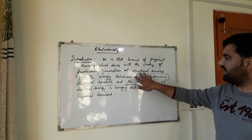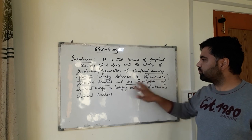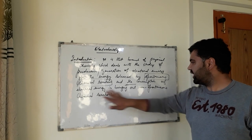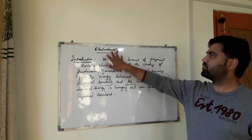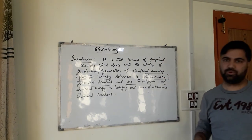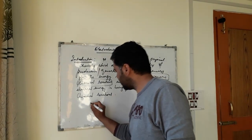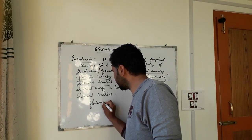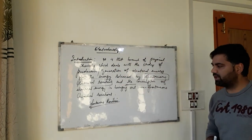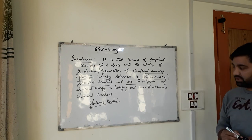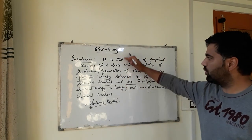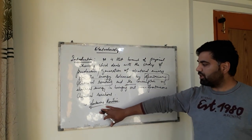How does electrical energy get produced from spontaneous chemical reactions? And how does electrical energy get consumed in carrying out non-spontaneous chemical reactions? That portion of chemistry we call electrochemistry. So if I am to clarify what spontaneous reactions are, you should know it — this is a topic from class 11 thermodynamics, but here we should know a little bit about it.